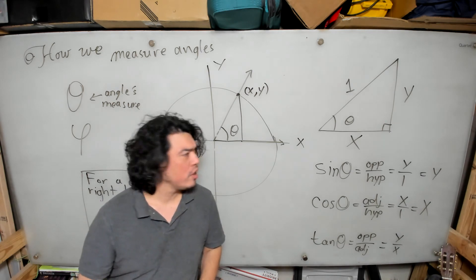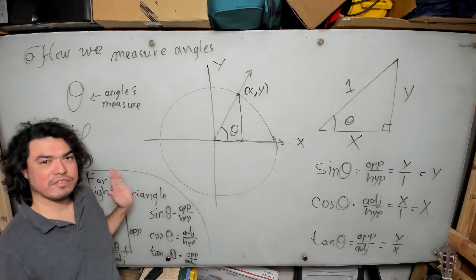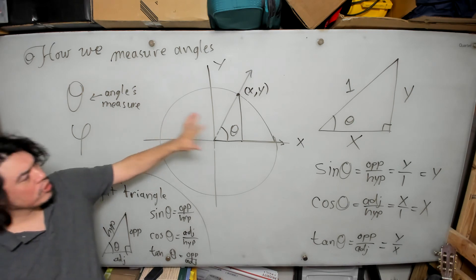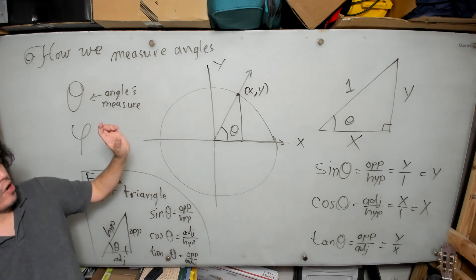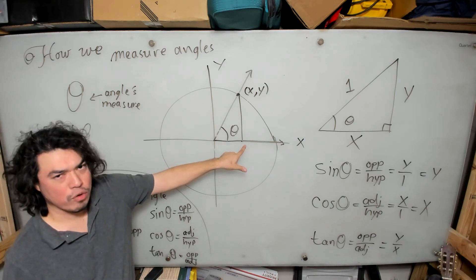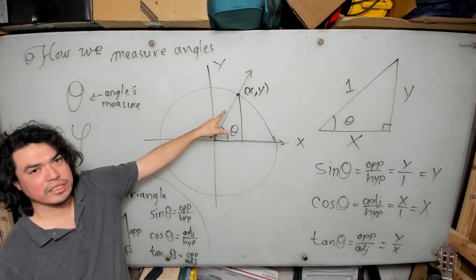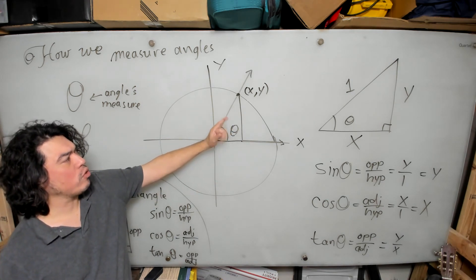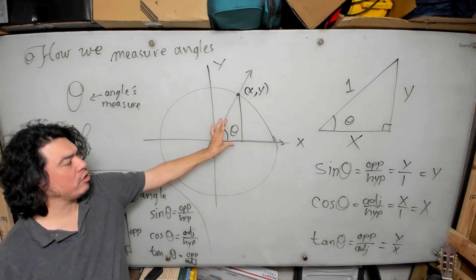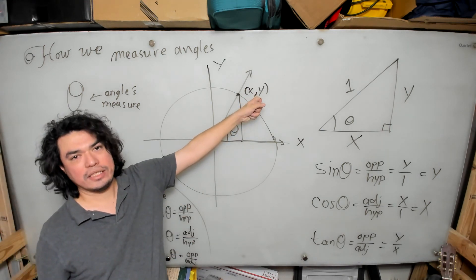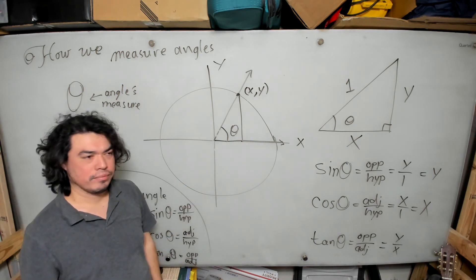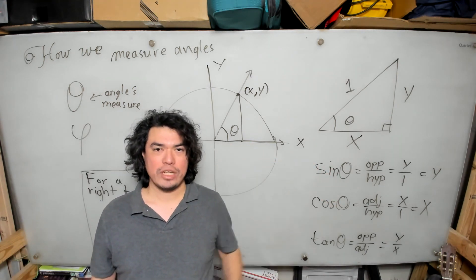The key takeaway from this lecture is this: once we pursue this construction using facts from right triangle trigonometry, we can see that for any angle in standard position — whose vertex is on the origin, whose initial side overlaps the positive x-axis, and whose terminal side opens counterclockwise — that intersection point with the unit circle gives us the sine and cosine of that angle, where the cosine is the x-coordinate and the sine is the y-coordinate. We'll look at further consequences of this later.